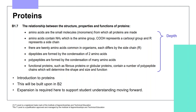The first time we come across proteins is within B1.7, which covers the relationship between the structure, properties and functions of proteins. The bold point is the overarching learning point and subsequent bullet points provide the depth students need. Students need to cover the definition of an amino acid, the general structure, awareness that there are 20 different amino acids each with a different side chain, how dipeptides are formed, and the two types of proteins — fibrous and globular.